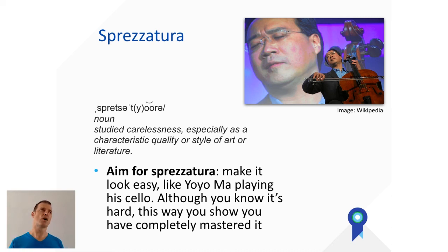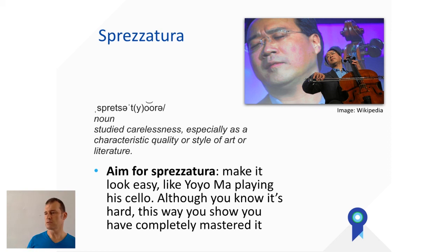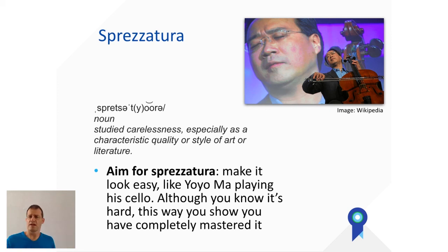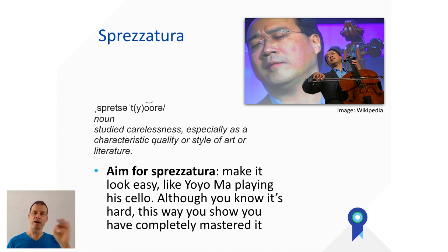After you look up the Steve Jobs video, look up a Yo-Yo Ma video. Yo-Yo Ma is probably one of the best cello players on planet Earth. Watch what he does — you see him playing and it looks really easy, like 'wow, I want to do it too.' Think again. He spent months to get one piece right, and then another month making it look easy. Now why is that important? Why do you want to have sprezzatura?